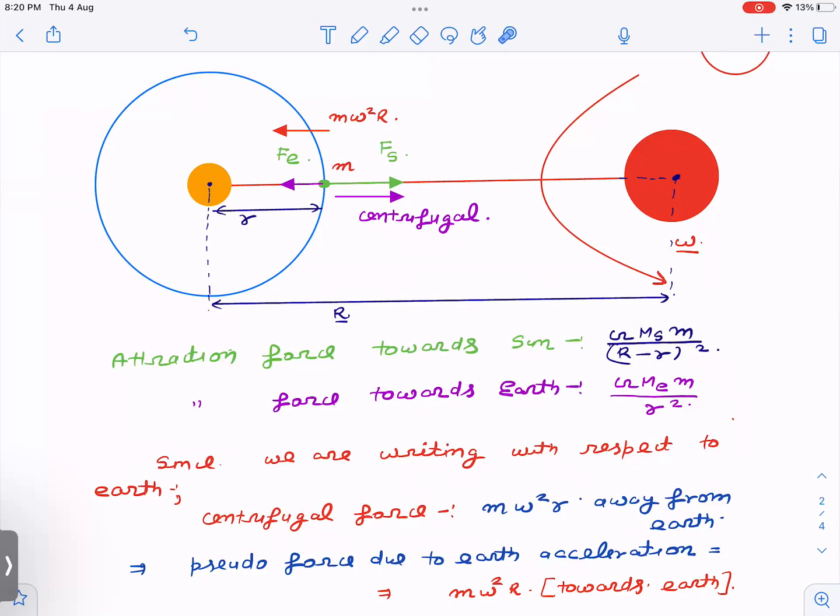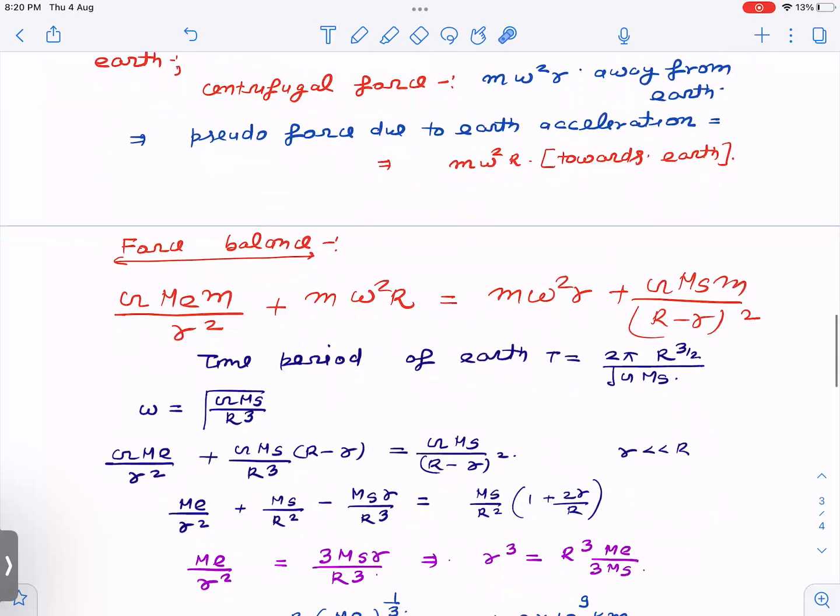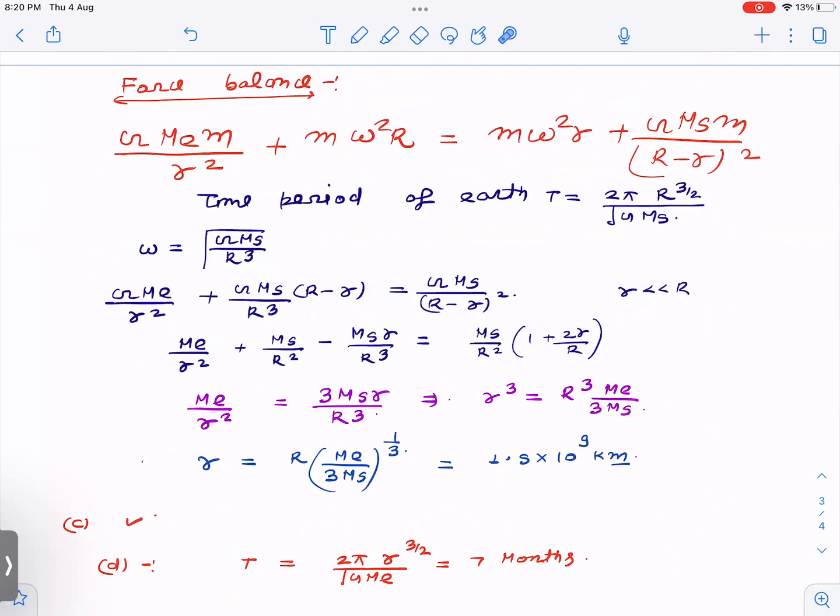Now we are going to balance these forces. Centrifugal and attraction towards sun are in the same direction. The force due to Earth's acceleration is towards Earth along with gravitational attraction of Earth. We are just going to equate this and take some approximation to calculate small r. This is the force attraction towards Earth, and this is the pseudo force due to Earth's centripetal acceleration. This is centrifugal force and attraction due to sun.